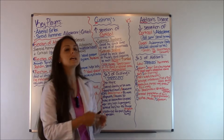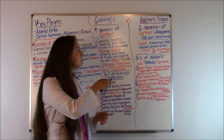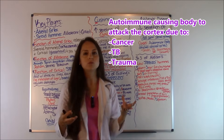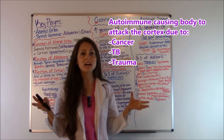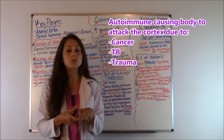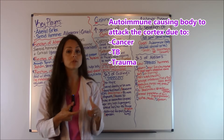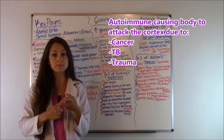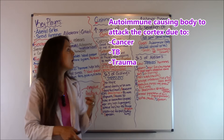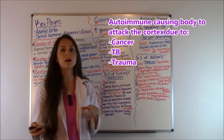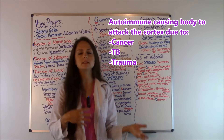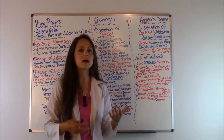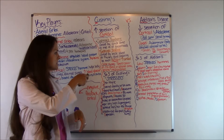The causes of Addison's disease are typically an autoimmune disorder, where the body attacks the adrenal cortex in the adrenal glands. It can also be due to cancer, tuberculosis, or hemorrhaging from trauma such as a car accident — something that has traumatically affected the adrenal glands.